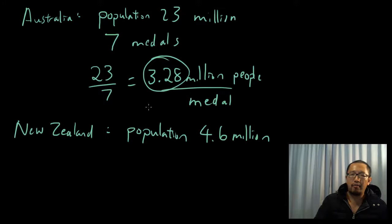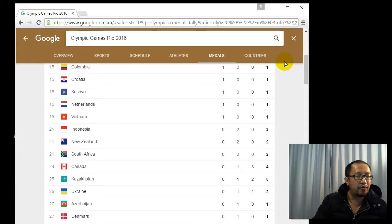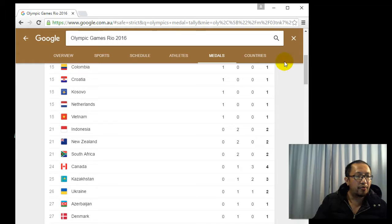And how many medals do they have right now? New Zealand currently has two medals. So let's do 4.6 divided by 2, which is 2.3 million people per medal.